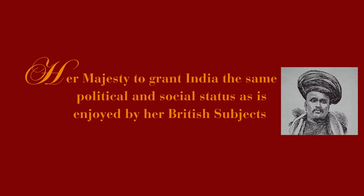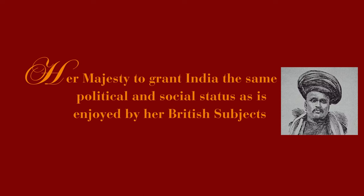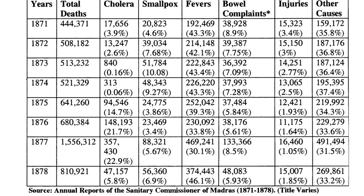Joshi's statement included the following request: for Her Majesty to grant India the same political and social status as is enjoyed by her British subjects. This Darbar has also been controversial due to the concurrent Great Famine of 1876 to 1878. Many critics argued that funds should not have been diverted from relief efforts, for the Darbar was essentially a party for the ruling class of India.